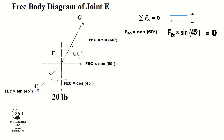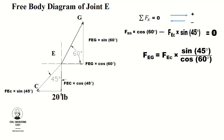Setting their algebraic sum equal to zero, eliminate FEG from the equation and write it in terms of FEC. So FEG = FEC × sin(45°) / cos(60°). By simplification, FEG = √2 × FEC. Label this as equation number one. These two forces are unknown and cannot be found at this stage.